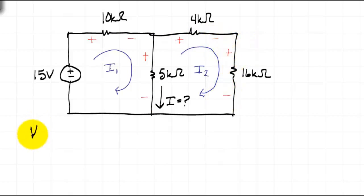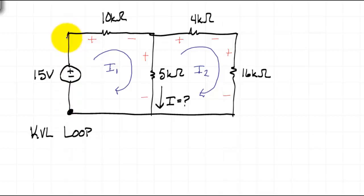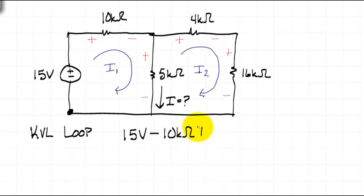I will then do Kirchhoff's voltage law starting with the left-hand loop. My habit is to start at the lower left-hand corner of a loop and go around clockwise. You can choose a different place to start as long as you begin and end in the same spot and go in the direction of the current for the loop you're in. Starting in the lower left-hand corner going clockwise, the voltage supply is 15 volts — a positive voltage in the KVL equation. Continuing around, as we pass through the 10kΩ resistor, the direction of I1 agrees with the passive sign convention, so that will be a voltage drop of minus 10kΩ times I1.